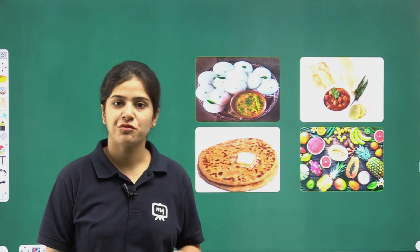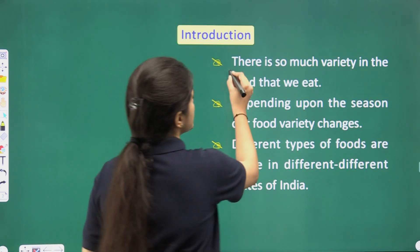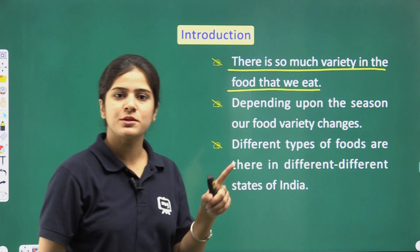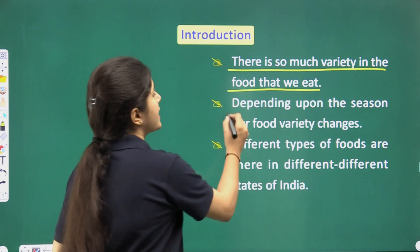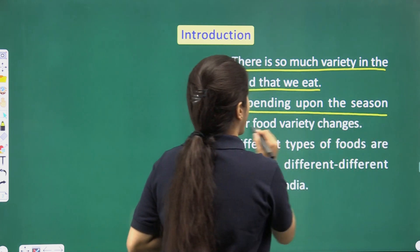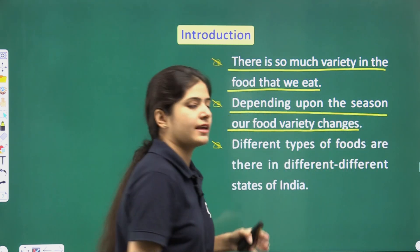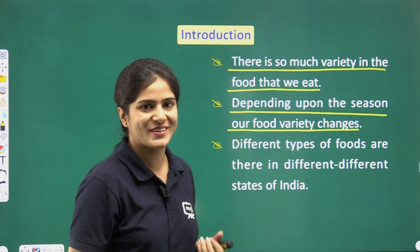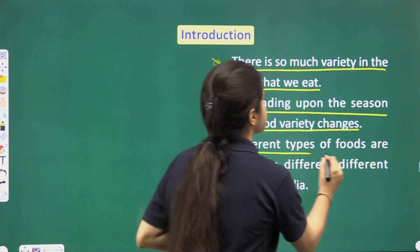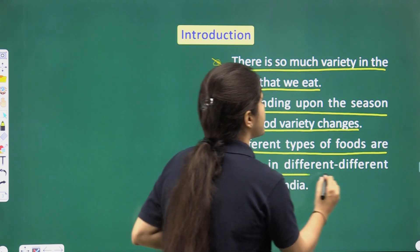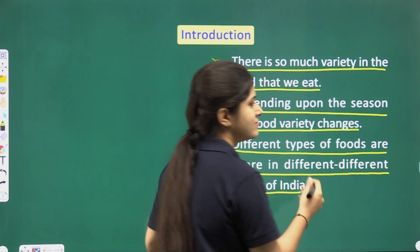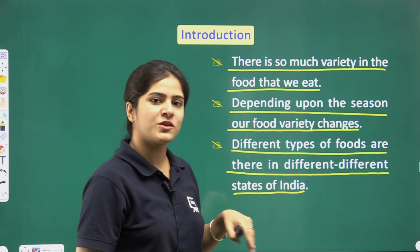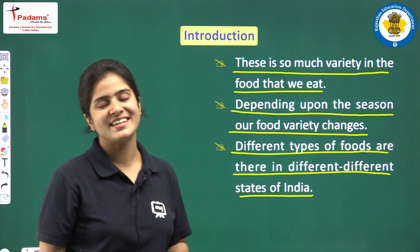So, to summarize what we have discussed: there is so much variety in the food that we eat, like Chole Bhature and Aloo Paratha. Depending upon the season, our food variety changes — in summers we drink lassi, and in winters we eat ladoos. Different types of foods are found in different states of India: Northern India has Aloo Paratha, Southern India has Idli Sambar.